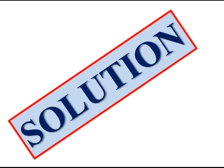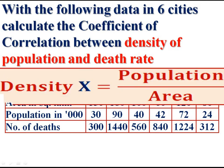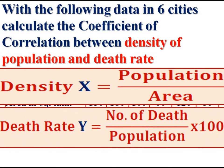We are entering into its solution. With the following data in six cities, calculate coefficient of correlation between density of population and death rate. We have to compute correlation between x variable — density of population — and y variable — death rate. Density of population equals population divided by area, forming the x variable. Death rate equals number of deaths divided by population, into hundred, forming the y variable.